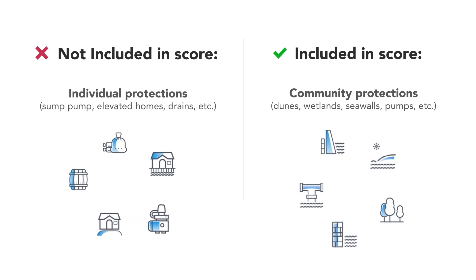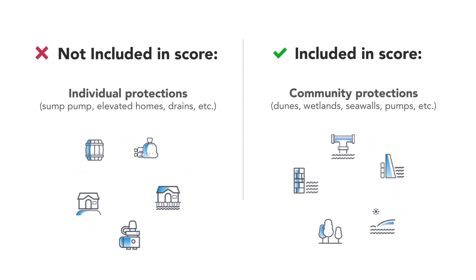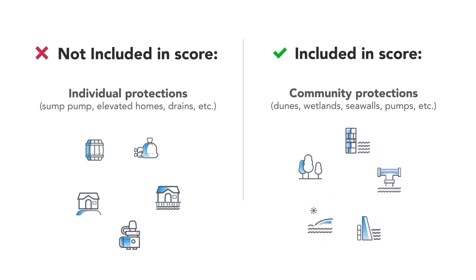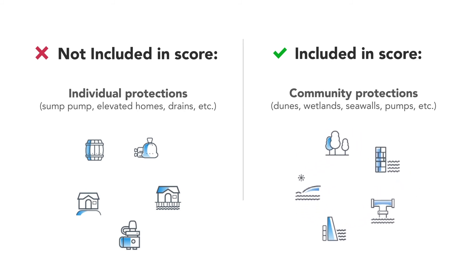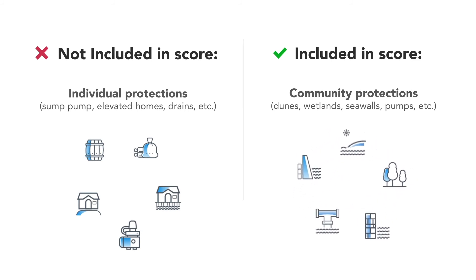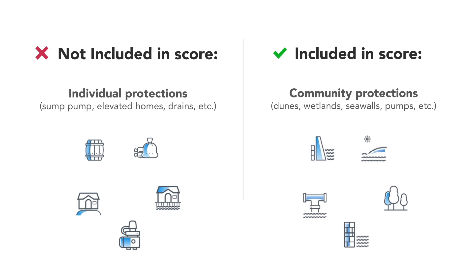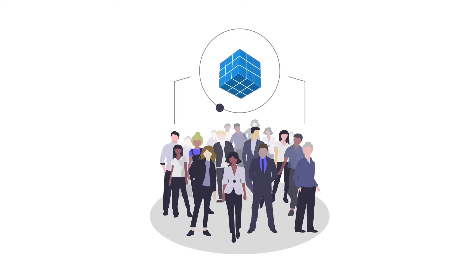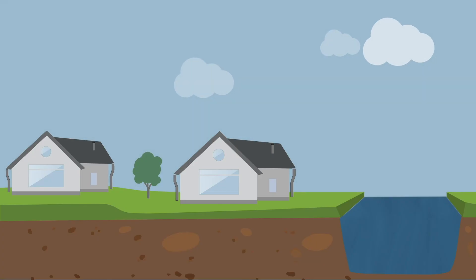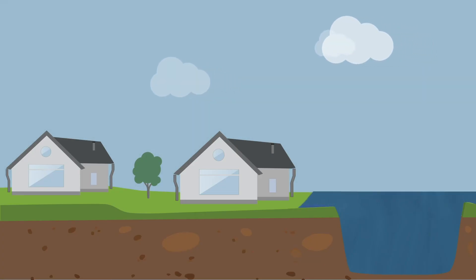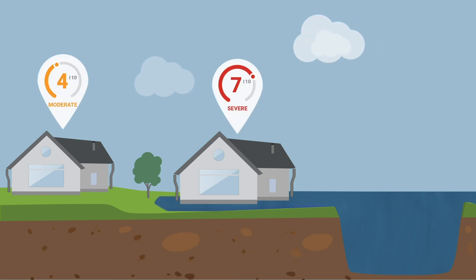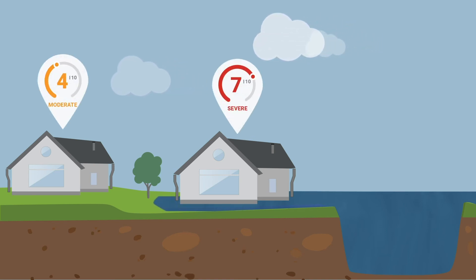Flood Factor does capture thousands of community flood prevention measures, including features like dunes and wetlands, as well as geoengineered efforts like large seawalls and pumps, and is working with local experts to continue adding missing features. Even neighbors can have significant differences in flood risks, largely due to differences in elevation, proximity to water, and proximity to flood risk reduction projects.